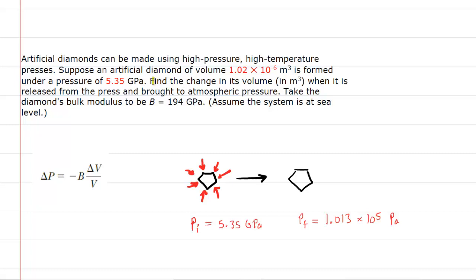In this question, we are asked to determine the change in volume of a diamond when it is brought from an initial pressure of 5.35 gigapascals to a final pressure equal to atmospheric pressure, which is 1.013 times 10 to the power of 5 pascal. We have both the initial and final pressures given to us.